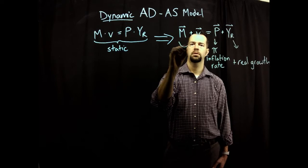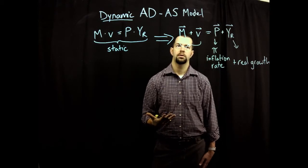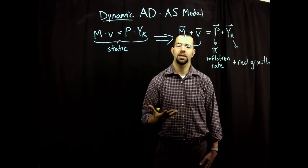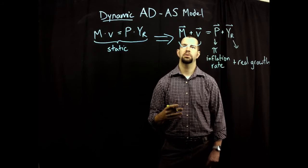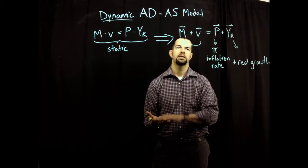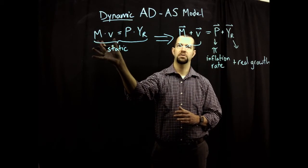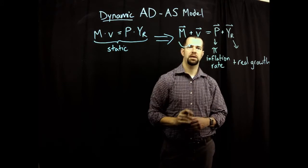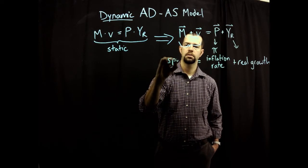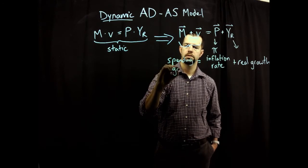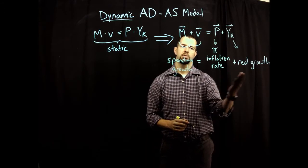So what is M plus V? It's the growth rate of the money supply plus the growth rate of velocity. Velocity is how many times in a period — a year — that you spend the same dollar. Given a certain growth rate of money times the number of times you use it for spending, that gives you your total amount of spending — the growth rate of spending. So spending growth equals the inflation rate plus real growth.